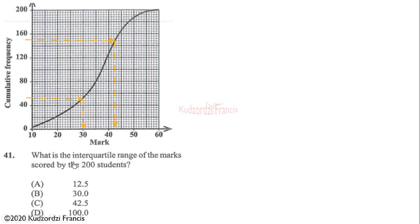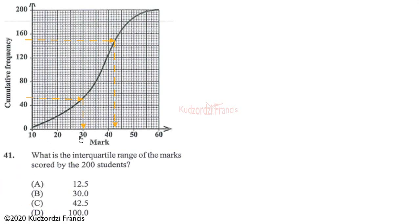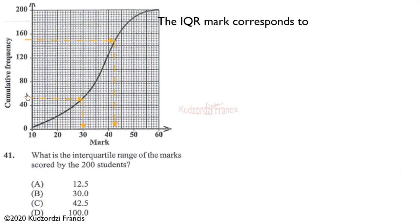We are continuing with question 41 of May 2019 Paper 1, and now we are finding the interquartile range of the marks scored by 200 students. You can look at the previous video and check question 40. The interquartile range corresponds to the third quartile minus the first quartile.